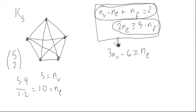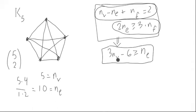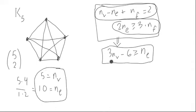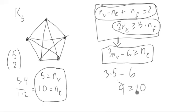A previous video showed how these two conditions together can be combined into one particular inequality relating only the number of vertices to the number of edges. If we put in five for the number of vertices, we get 15 minus 6, which is 9 — and 10 is not less than or equal to 9, so that's a false statement.